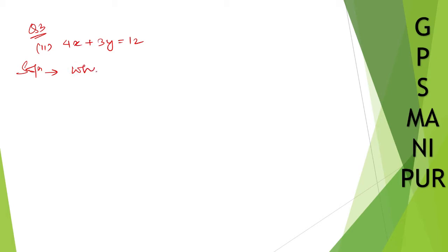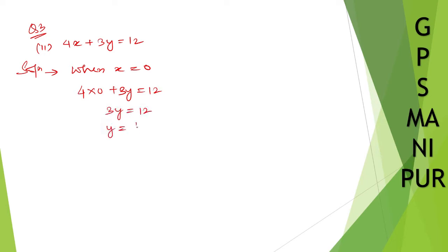So let us start when x is equal to 0. When x is equal to 0, 4 into 0 plus 3y is equal to 12. 4 into 0 is 0, so 3y is equal to 12. Y is equal to 12 divided by 3, which is 4. So therefore, when x is equal to 0, y is equal to 4.